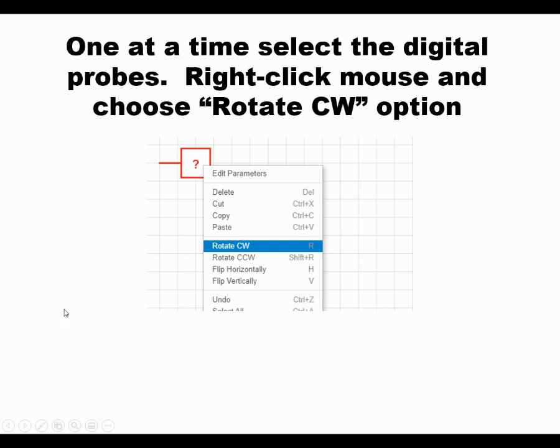Next thing you need to do is one at a time, highlight, click on those probes, and right mouse button, choose rotate clockwise.